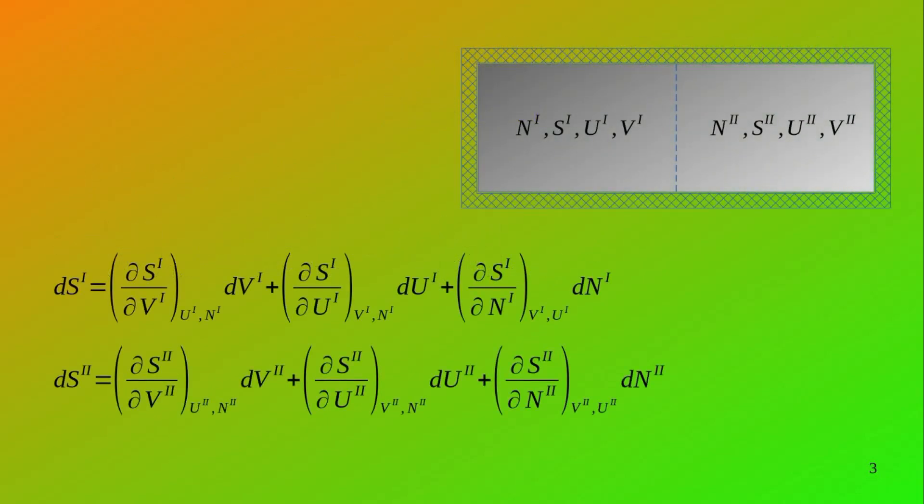Let's consider an isolated system. This isolated system has two subsystems divided by a permeable membrane. The system to the left has moles n₁, entropy S₁, internal energy U₁, and volume V₁. The system to the right has moles n₂, entropy S₂, internal energy U₂, and volume V₂.